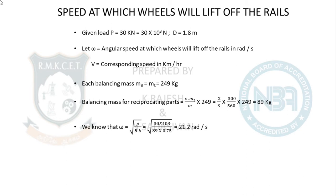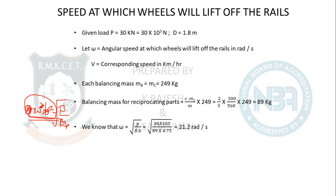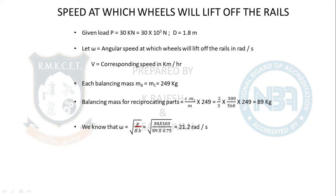Out of 249 kg balancing mass, only 89 kg is for the reciprocating mass — the remaining 160 kg is for rotating masses only. This 89 kg mass creates the hammer blow effect. Using the derived formula: at the limiting condition, B·ω²·b = load on wheel (30 kN). Rearrange for ω: ω = √(W ÷ (B·b)). Substituting: load = 30 kN, B = 89 kg, b = 0.75 m. Solving gives ω = 21.2 rad/s.